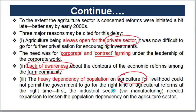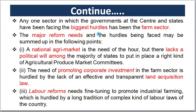The government focuses on the agriculture sector and must divert population dependence away from agriculture gradually. We need to put agriculture as the prime moving force. Both the state and central government in India face the biggest hurdles in the farm sector. The major reforms required are significant risks, and we need to look at the following key points.